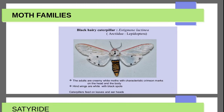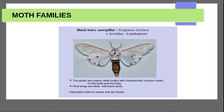Now for moth families. First moth family is Arctiidae. Adults are creamy white moths. Wings are white with black spots. Body also has black spots. The caterpillar feeds on leaves and earheads — it is a black hairy caterpillar. Scientific name: Spilosoma obliqua.